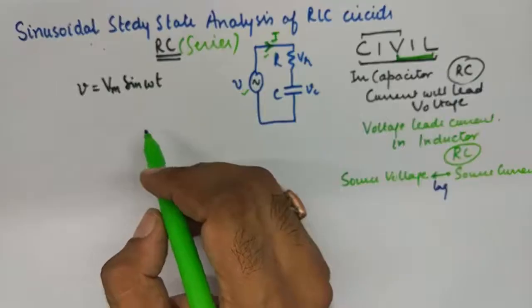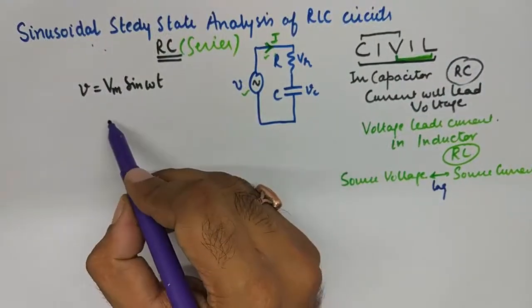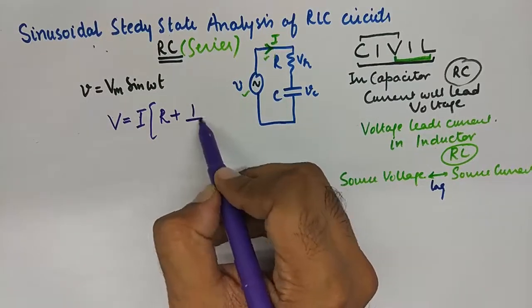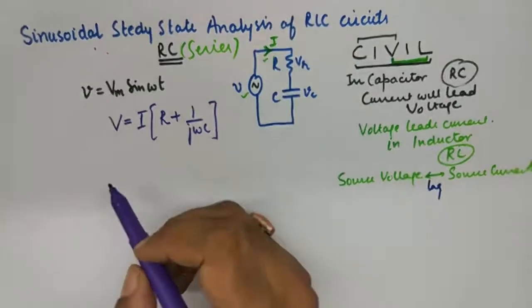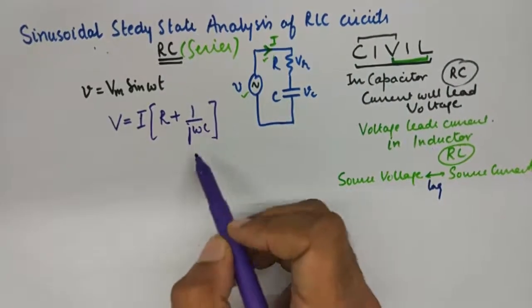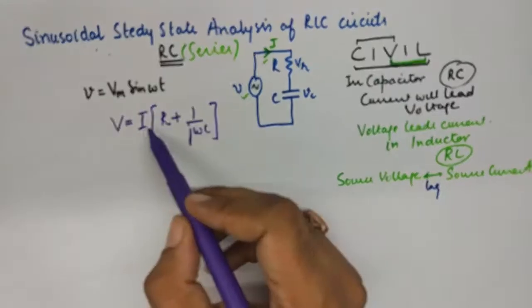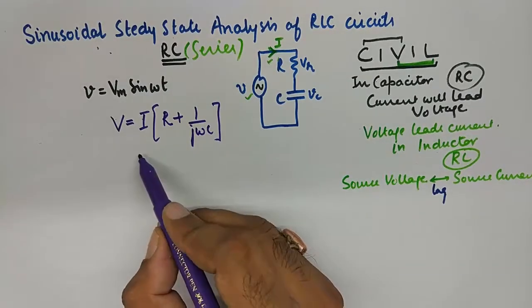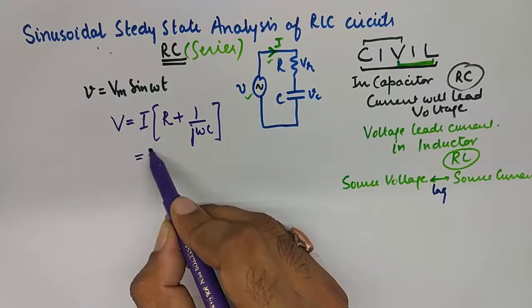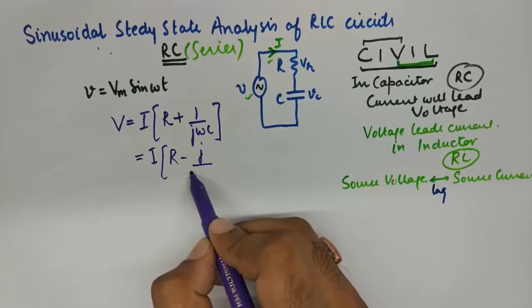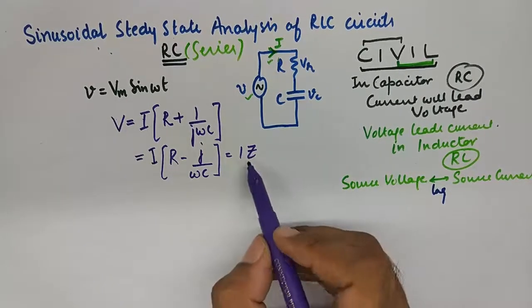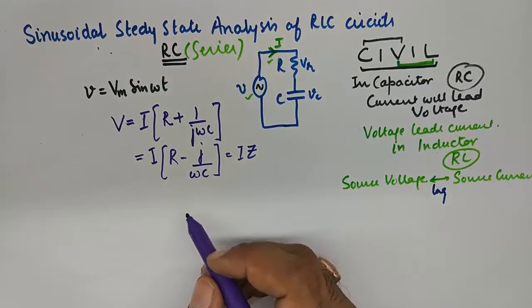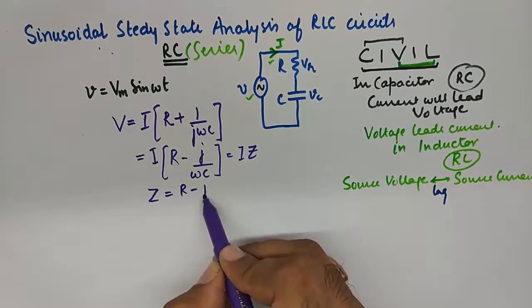And with that being said, now we come to the mathematics of this. So we can clearly see that the voltage in the circuit can be represented by the voltage drop at the resistor and the voltage drop at the capacitor. So I into R is the voltage drop across the resistor. And I into 1 upon j omega C is the voltage drop across the capacitor. So just a little bit of rearrangement, or I can simply write it as I into Z, which is the impedance of this series circuit, where impedance is R minus j upon omega C.